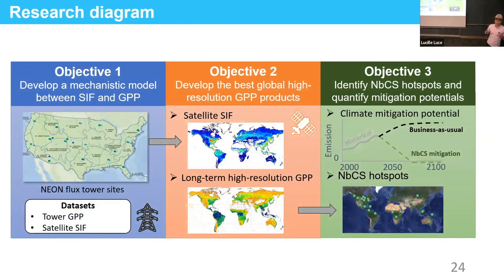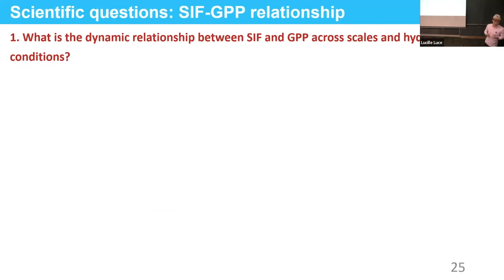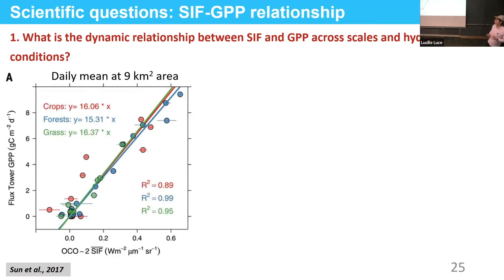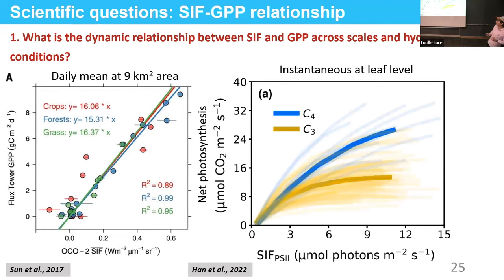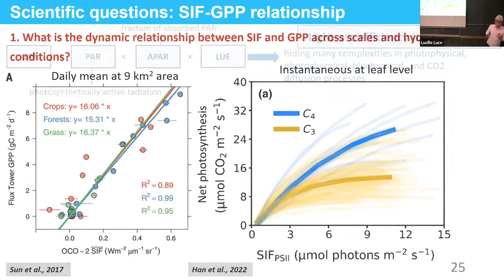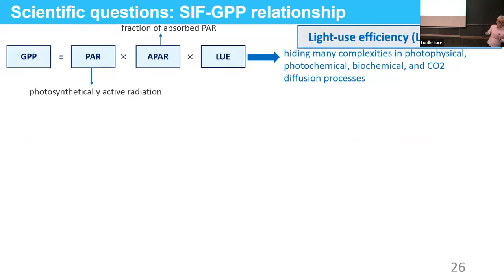This is my overall research diagram with three distinctive objectives. For the first objective, on the dynamic relationship between SIF and GPP: initial findings point to a linear relationship between SIF and GPP beyond the daily temporal scale and at larger spatial scales, while non-linearity happens at instantaneous and leaf levels, and also under stress conditions. From the LUE approach, GPP is directly linked to radiation by a simple linear equation.